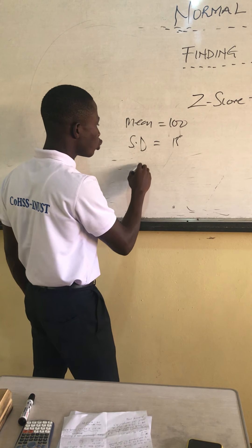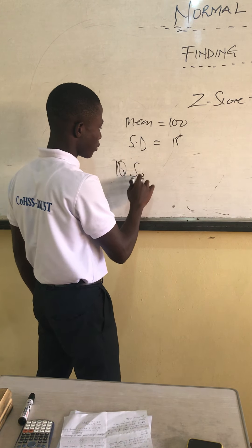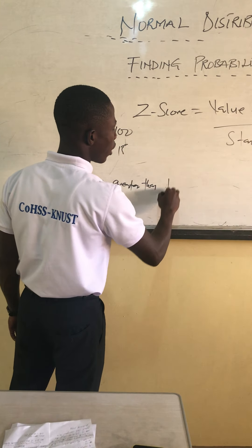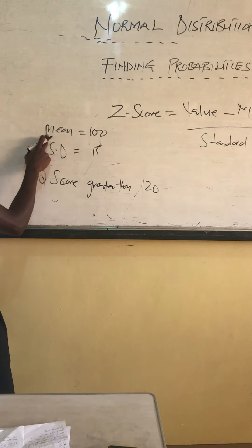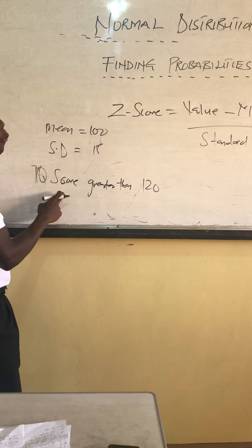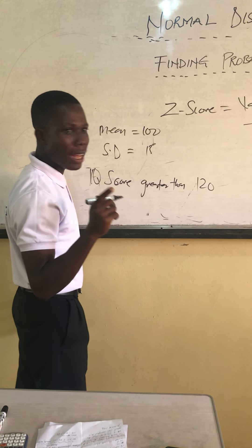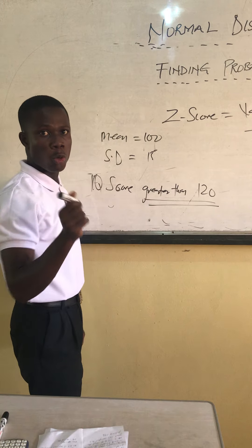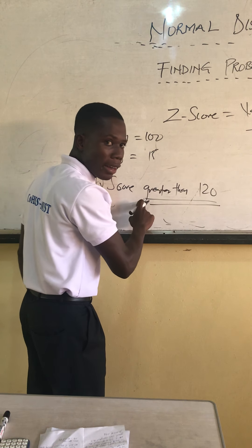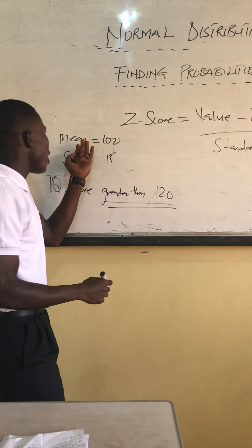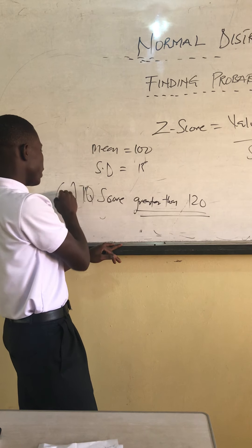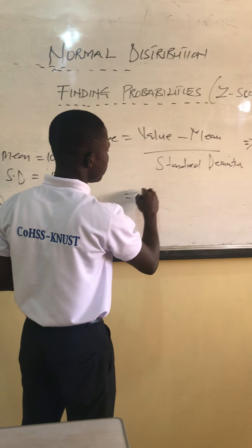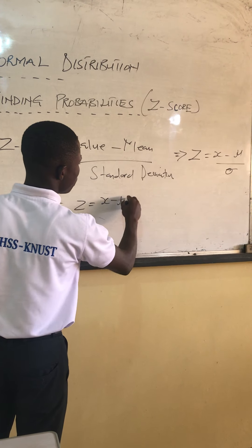So the IQ score — our X value — is greater than 120. This is our mean. This is our standard deviation. And the IQ score represents the value, that's X. We are saying that X is greater than 120. So we have our mean, our standard deviation, and our X. We just have to do substitution.